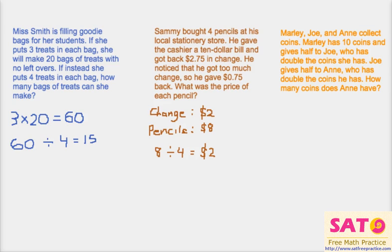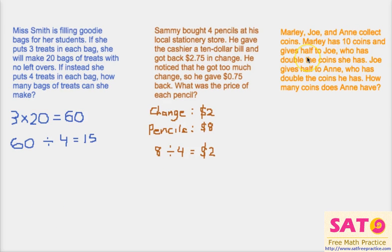For our final problem, Marley, Joe, and Anne collect coins. Marley has 10 coins and gives half to Joe, who has double the coins she has. Joe gives half to Anne, who has double the coins he has. How many coins does Anne have? This is harder than the previous two because it combines all elements of arithmetic operations. We start with 10 coins. After the transaction, Marley has 5 because she gives half to Joe.